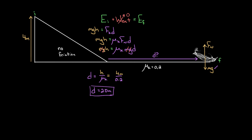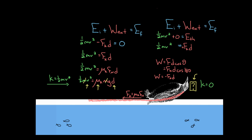So recapping: when there's a force of friction acting on an object, you can use conservation of energy by treating that frictional surface as part of your system — in which case you include it as a thermal energy on the final side. Or not including that surface as part of your system — in which case you include the same term with a negative sign as the external work done on your system. Regardless of what you do, the thermal energy generated is going to be the force of friction multiplied by the distance through which the object slides.